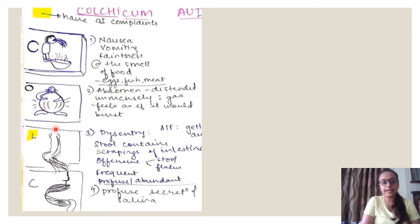Then this is L. Whatever has the highlighter has GI complaints. L shows us this is the stools. This is the intestinal lining and here the dysentery has intestinal scrapings. So the stool contains scrapings of intestine. It is offensive. The stool as well as flatus is frequent, profuse and abundant.